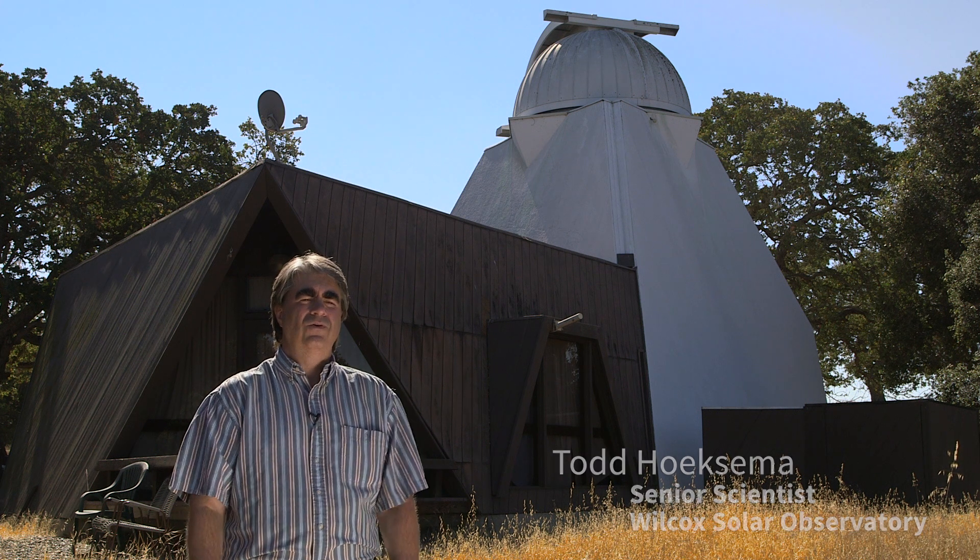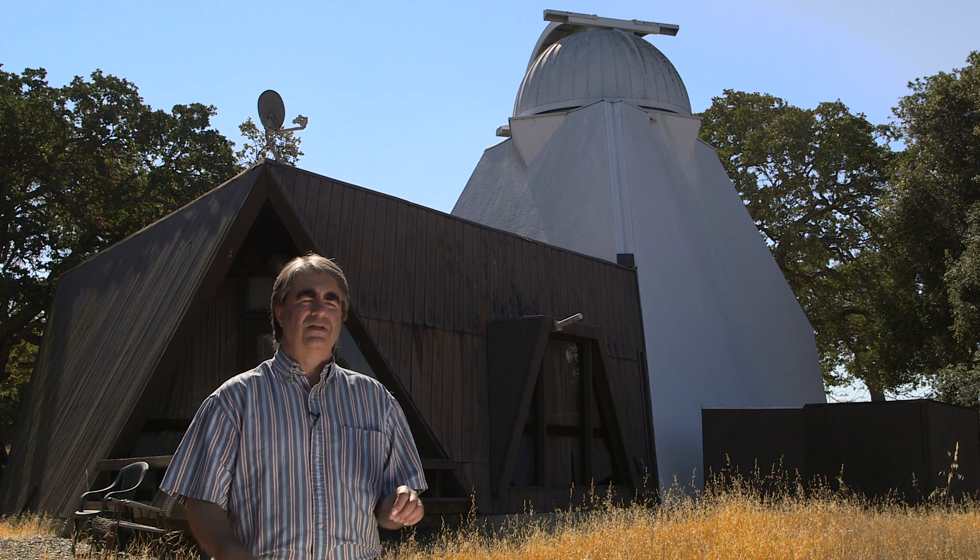And so what we're looking at is a reversal of the whole heliosphere, everything from the sun out past the planets.